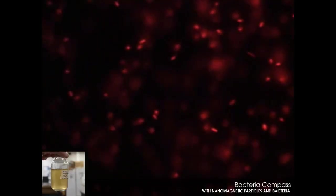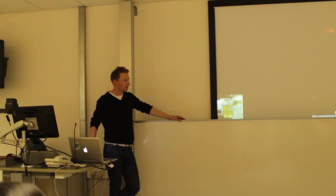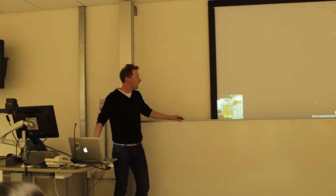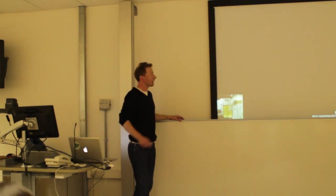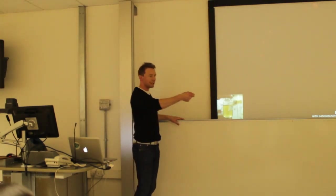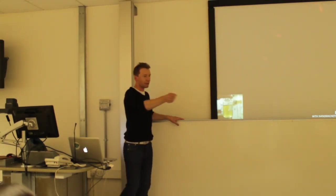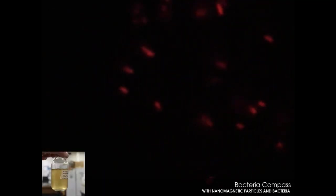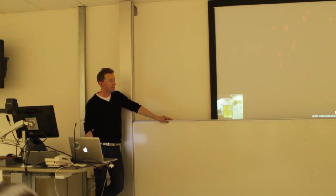Here's another example — a bacterial compass I made. I use nanomagnetic particles in bacteria and can actually move the bacteria around. You can maybe see them sort of twirling — that's me with a magnet twirling them around.